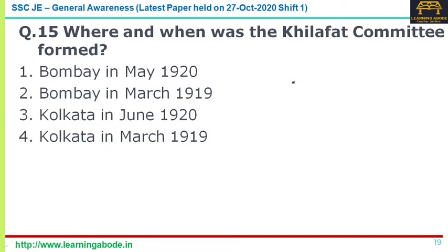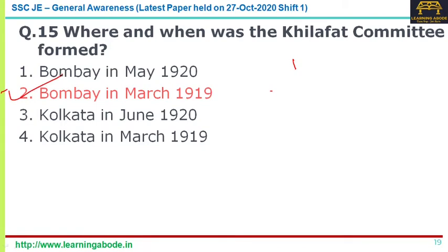Question number fifteen: where and when was the Khilafat Committee formed? The Khilafat movement was highly active from 1919 to 1924. It arose in India to express Muslim support for the Caliph of Turkey against the Allied Powers who won World War One, particularly against Britain. The Khilafat Committee was formed in Bombay in March 1919. Answer is option two.